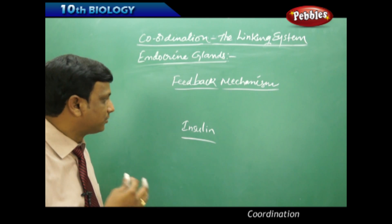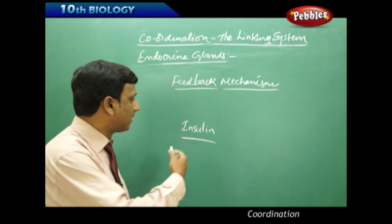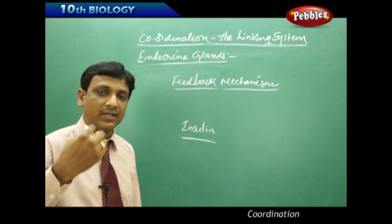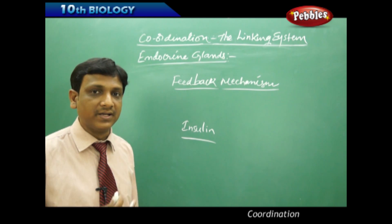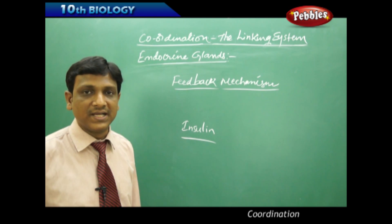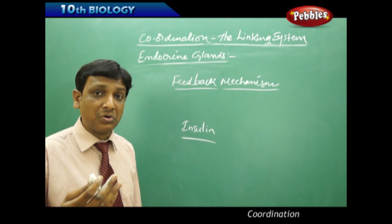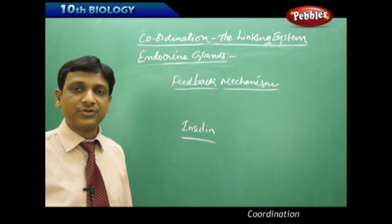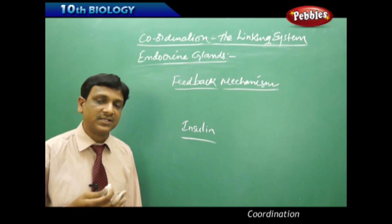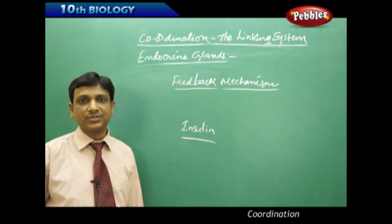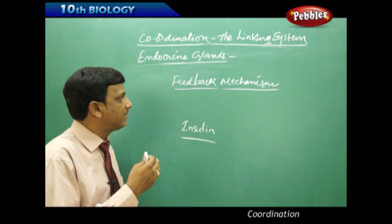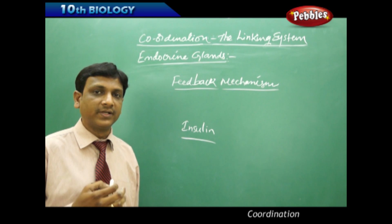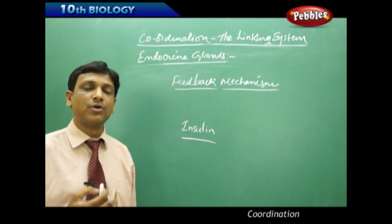Counteracting hormones are also there — insulin and glucagon. Once the amount of glucose in the blood increases, insulin converts the glucose to glycogen. Once the amount of glucose in the blood is low, the glucagon hormone converts the glycogen back to glucose. In this way, feedback mechanism is also observed.